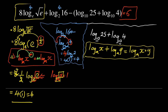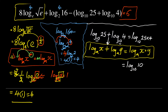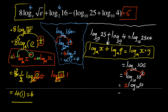We have the plus sign, so applying that law: log base 10 of (25 × 4) = log base 10 of 100. Now 100 is 10 to the power of 2, so applying the power law the 2 drops down: 2·log base 10 of 10. Since log base 10 of 10 equals 1, the answer is 2 times 1, which equals 2. So the whole bracketed part becomes 2.